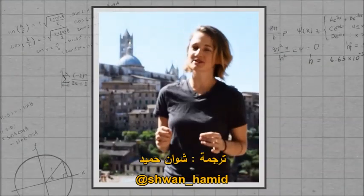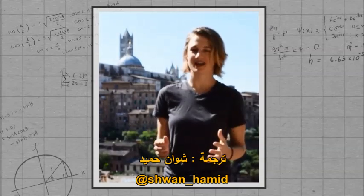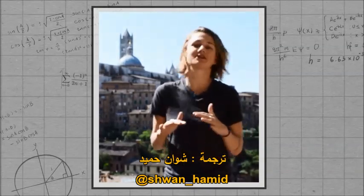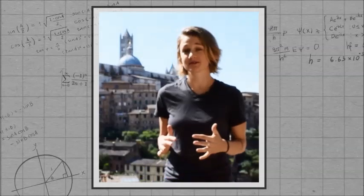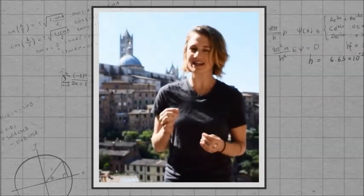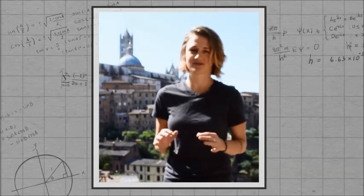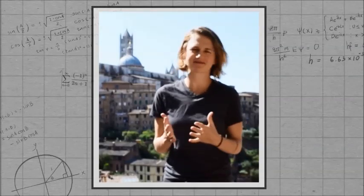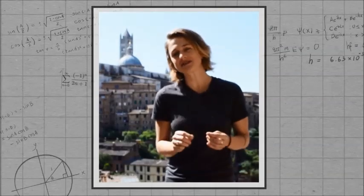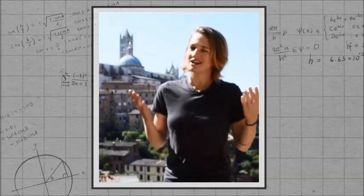I wanted to respond to some of your comments about our episode on a stochastic supertask. First, we should acknowledge that we're not very good at arithmetic. There were 28 balls in the urn, which means you had a 1/28th chance of removing one, not 1/29th — there were not 29 balls. Also, it should have said 9 times n in the formula, not 9 to the n. Arithmetic is hard.